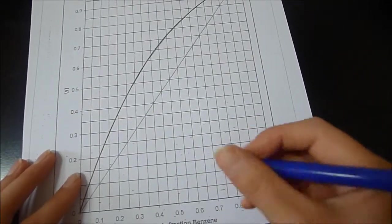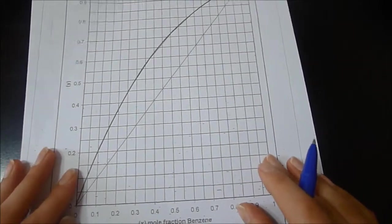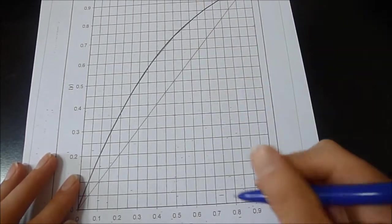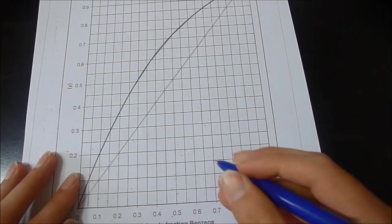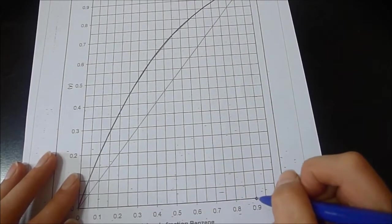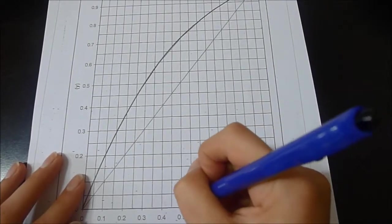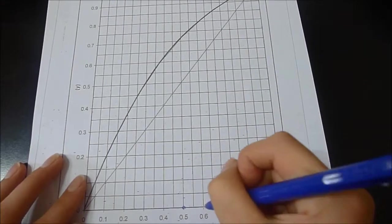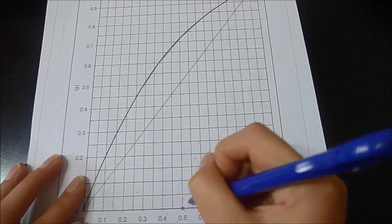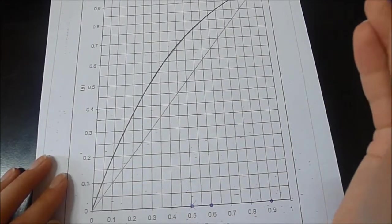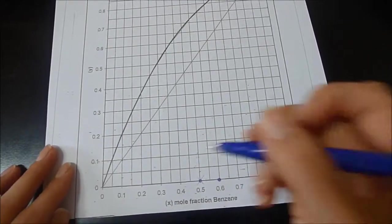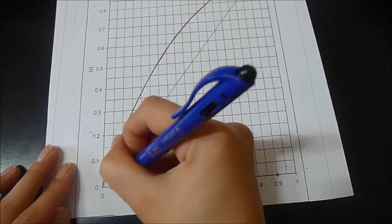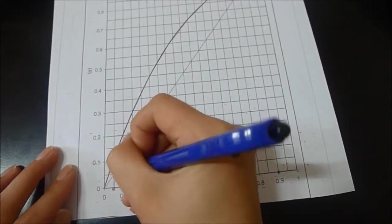Our first step is to draw the lines until the diagonal. XD is 0.9, XF is 0.6 actually, and XW is 0.05, which is here. So we have to draw like so.